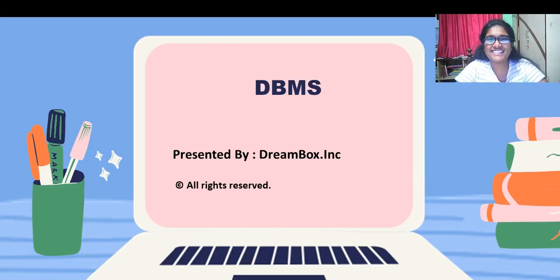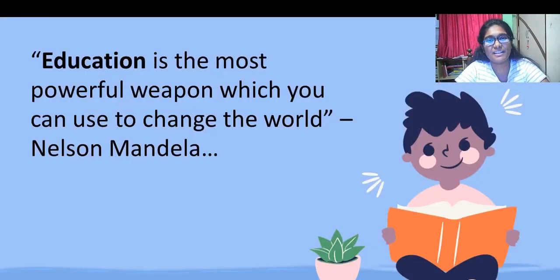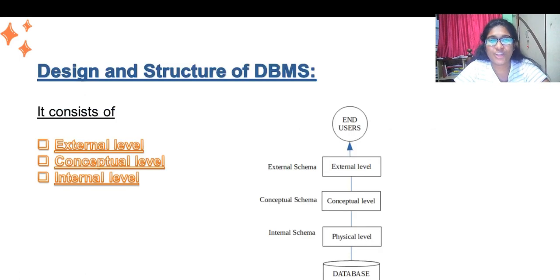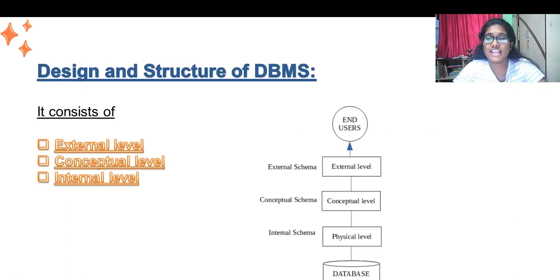Hi students, welcome back to the class. I am Bhuvana Shri. Today we are going to learn about the database management system. The main objective of database is to facilitate the creation of the data structures and to relieve the programmers from the stress of this complicated file. There are three main designs in the architecture of this DBMS.